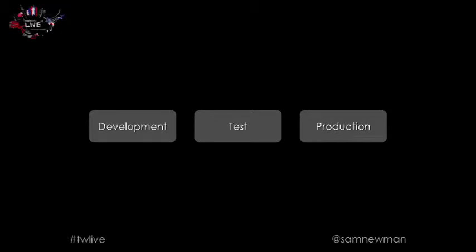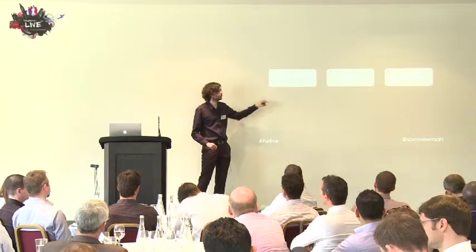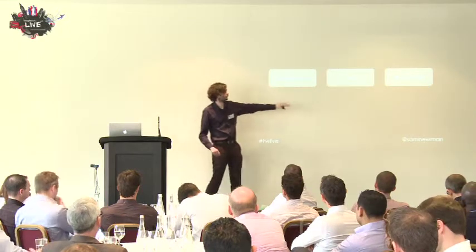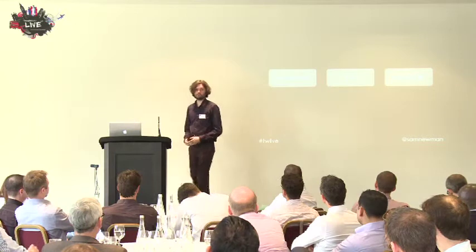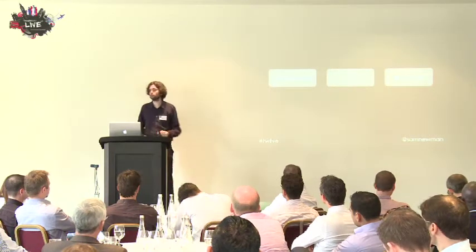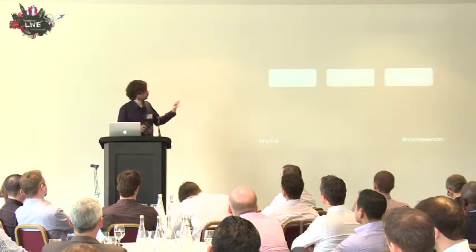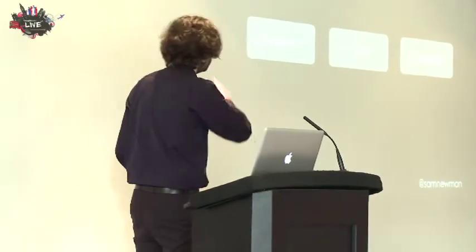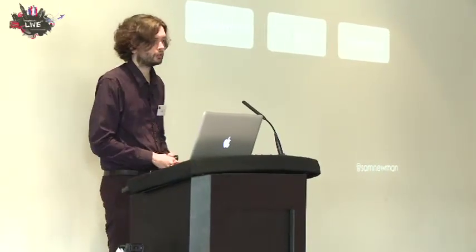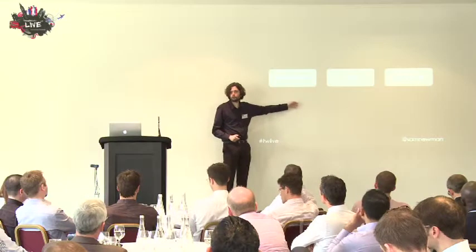Assemble a team. Think about the standard lifecycle — all the different roles involved in developing, testing, and operating your software. There could be five, ten, fifteen different roles involved. When moving towards continuous delivery, you're potentially going to have to make changes all across this lifecycle. What you need to look for are people within these teams who can effectively become champions for what you're trying to do — people that can help drive change forward across these functional areas.